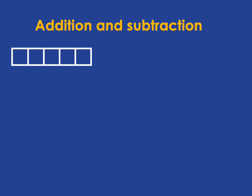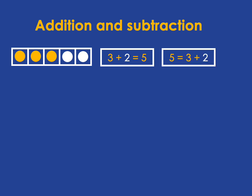For example, we can see that 3 plus 2 gives us 5, which we write like that. But we can also write it like this because the equal sign just means that the things on both sides of it are the same.